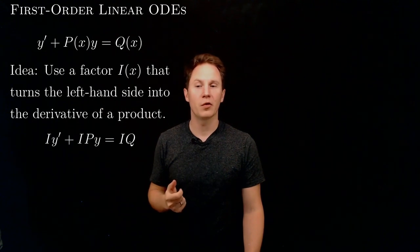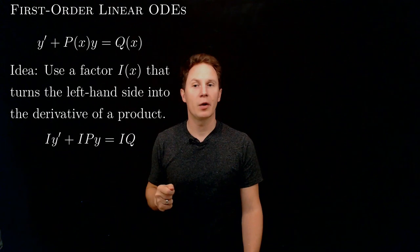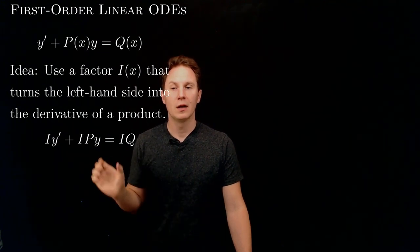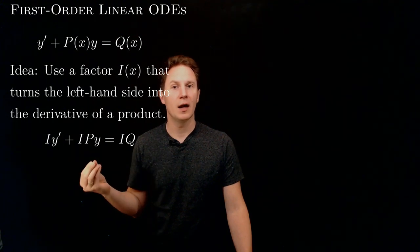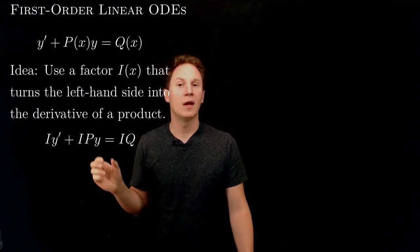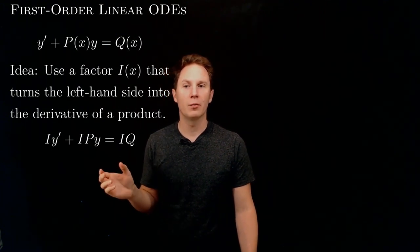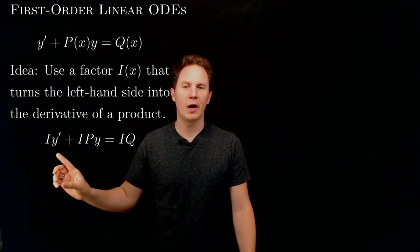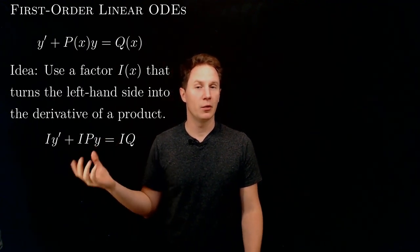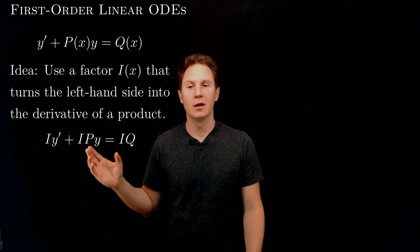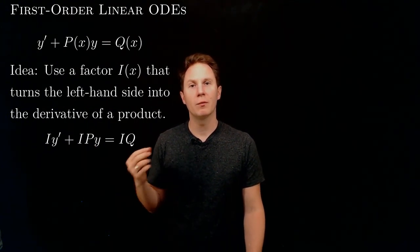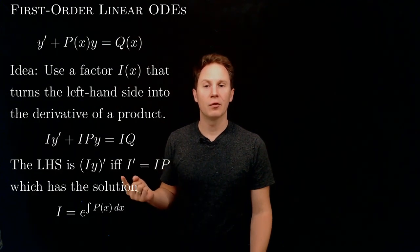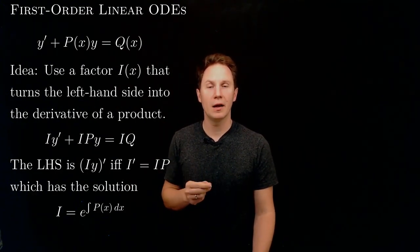Our aim is to multiply both sides by i to get i times y prime plus i times p times y on the left-hand side. We want to choose i of x so that this sum is the derivative of a product. Since we see i times y prime, for it to be the product rule in action, the other term needs to be i prime times y — which means i times p must equal i prime. This gives us a new differential equation for i, not for y.